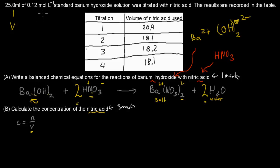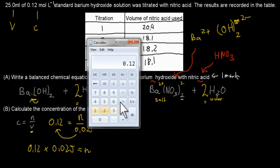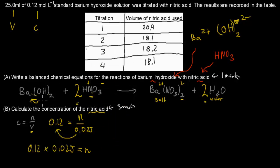That's our volume of barium hydroxide, and we've got the concentration given as 0.12 mol/L. Putting those into our equation: concentration = n/V, so 0.12 = n / 0.025 (converting 25 mL to 0.025 L). Rearranging: n = 0.12 × 0.025 = 0.003 moles. So the number of moles of Ba(OH)₂ is 0.003 mol.